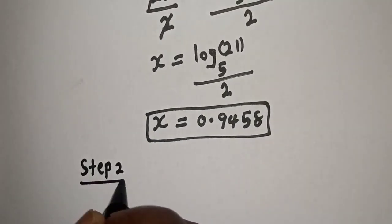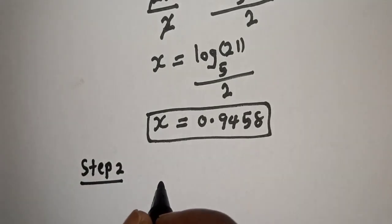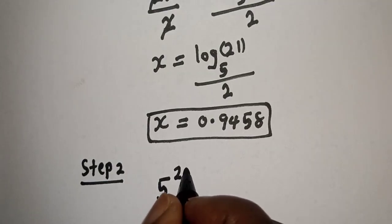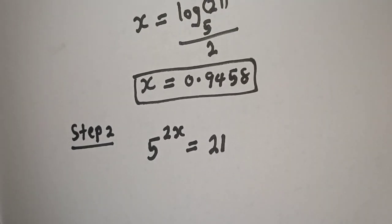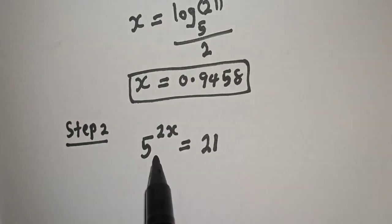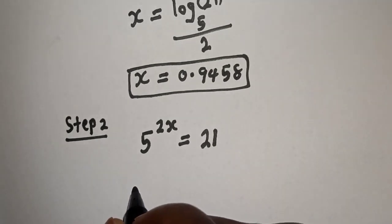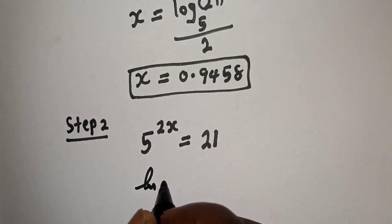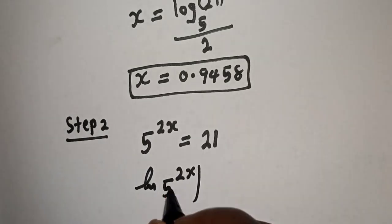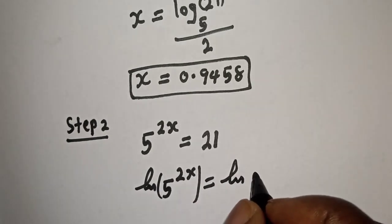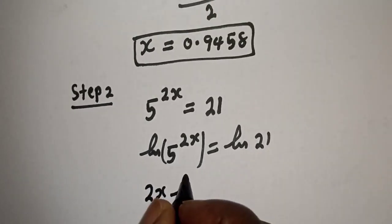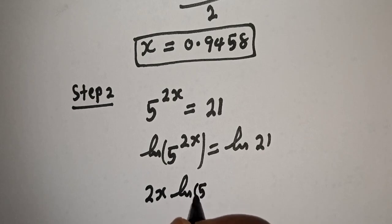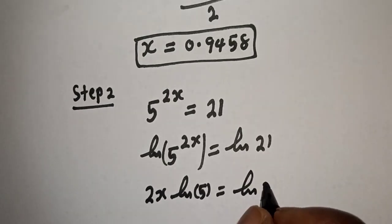Let's consider the second method. Step 2: we have the given equation, 5 raised to power 2x is equal to 21. We want to solve in three different ways. Let's take the natural log of both sides: natural log of 5 raised to power 2x is equal to natural log of 21. Bringing down the exponent: 2x times natural log of 5 is equal to natural log of 21.